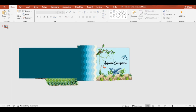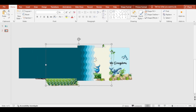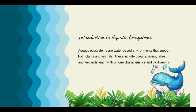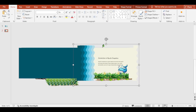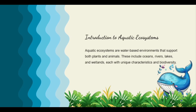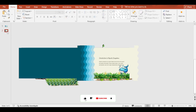Now select the slide and press Ctrl plus D to make a duplicate slide. Then again, duplicate the slide and adjust the shapes.